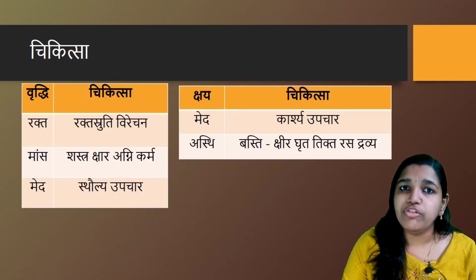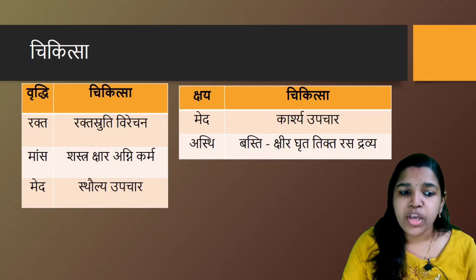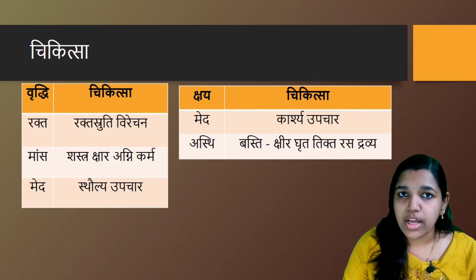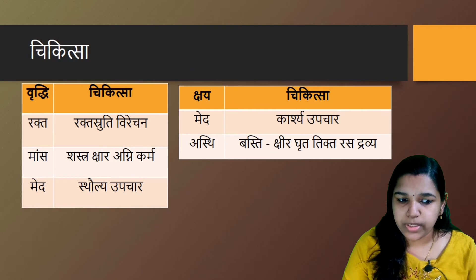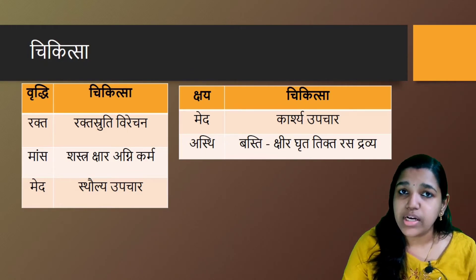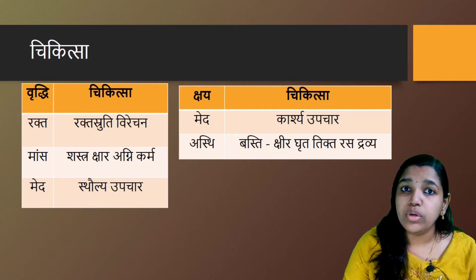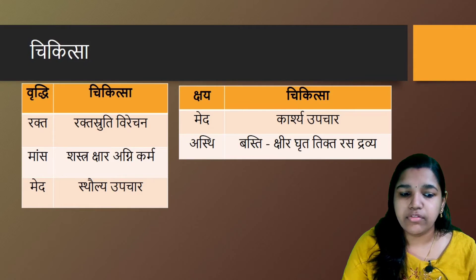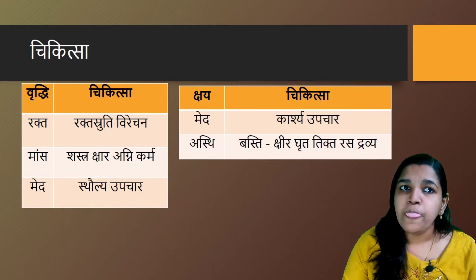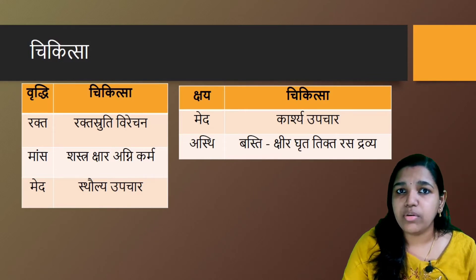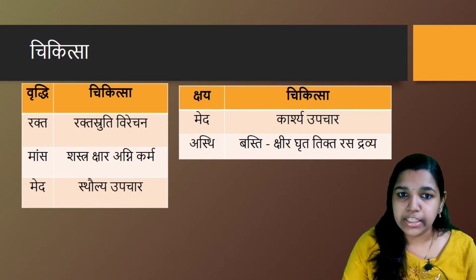The management of Vrithi and Kshaya of Dhatus is now described. When there is Rakta Dhatu Vrithi, Raktamokshana (bloodletting) and Virechana (purgation) have to be done. When there is Mamsa Vrithi, Shastra, Kshara and Agnikarma have to be performed. When there is Medha Vrithi, Sthaulya upachara has to be done — that is, all measures for reducing obesity must be adopted.